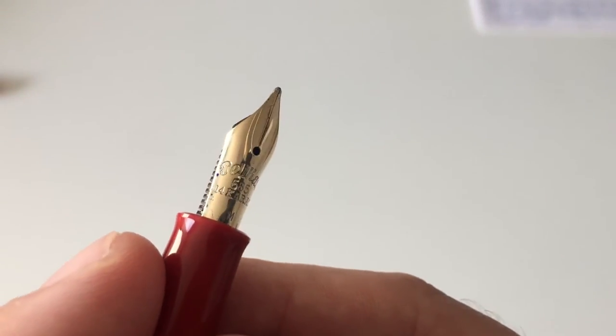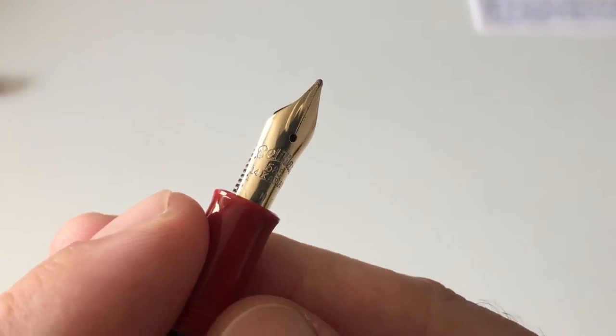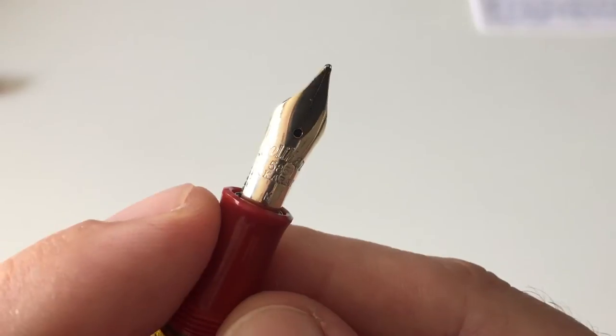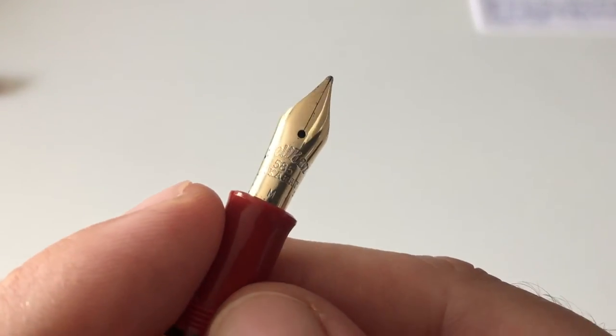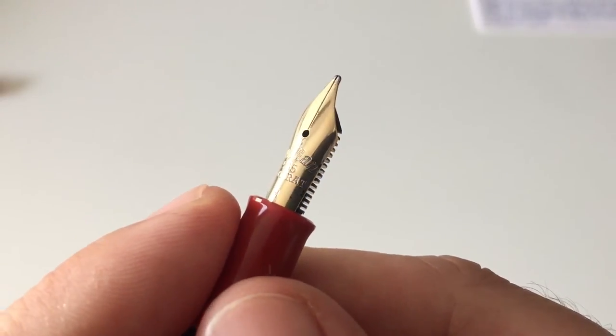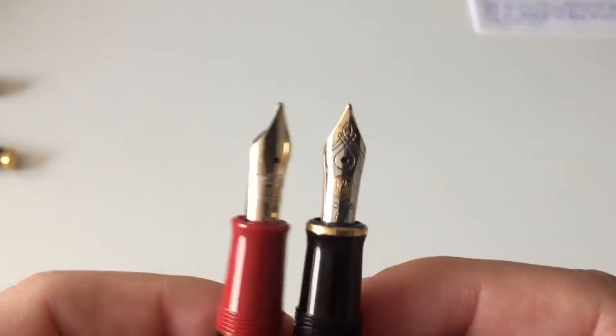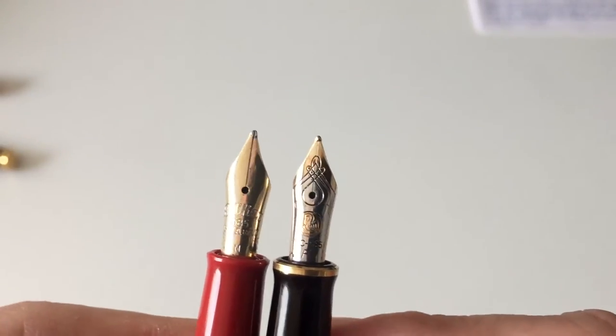Put the cap aside. We have a lovely gold nib here that also retains the appearance of the vintage Pelikan nibs, saying Pelikan in that old typo logo that you've also seen on the ink bottle. 585 for the gold content, 14-karat, and then medium for the width designation.